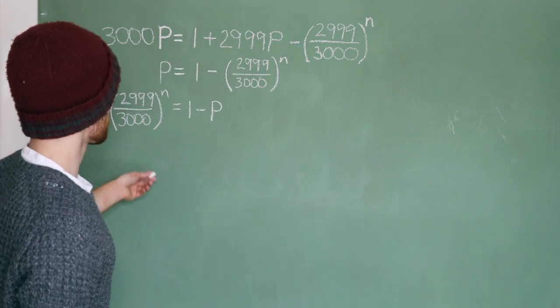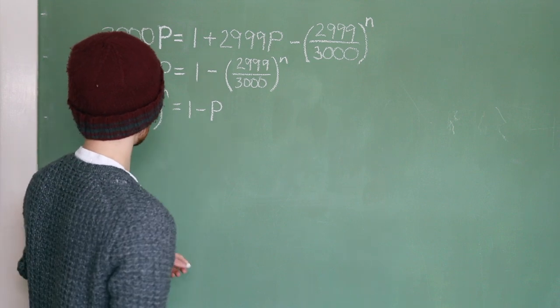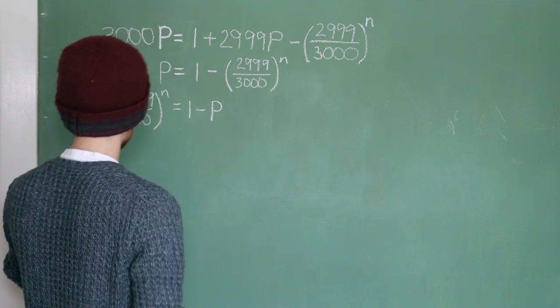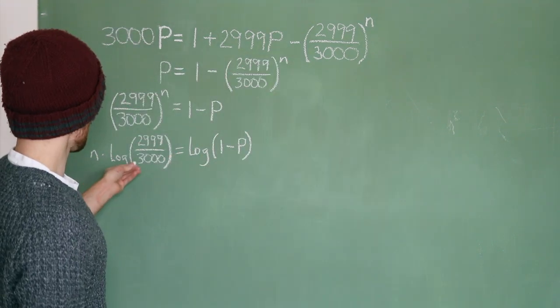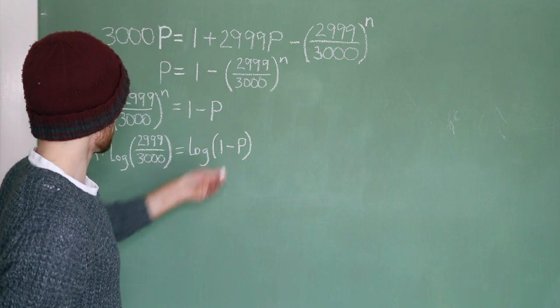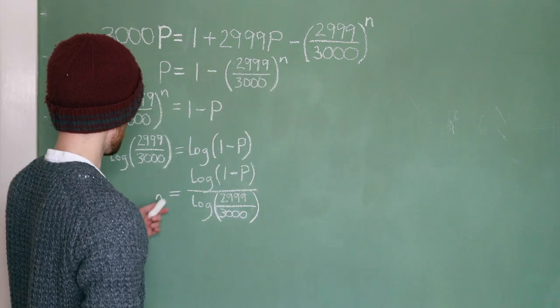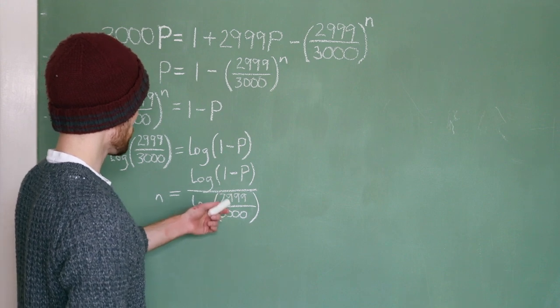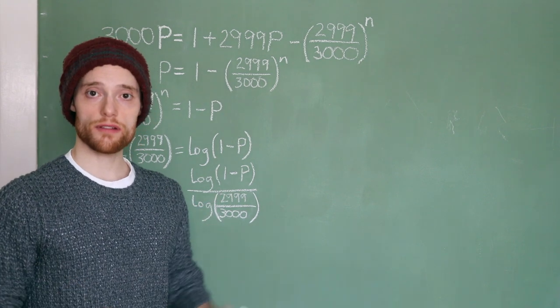2,999 over 3,000 to the power of n equals 1 minus p. Now, let's take the log of each side so we can get n out of the exponent. n times log of 2,999 over 3,000 equals the log of 1 minus p. And that gives us n equals log of 1 minus p over log of 2,999 over 3,000. And now, we've solved for n.